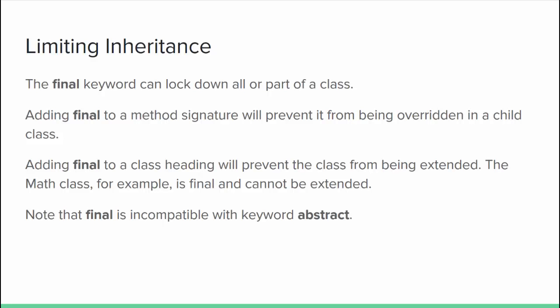There may be cases when you want to limit inheritance — a method you always want to work the same way in all child classes, or an entire class you don't want extended. The `final` keyword helps you lock down all or part of a class. Putting `final` in front of the method signature prevents that method from being overridden in any child class. Putting `final` in front of the class heading prevents the entire class from being extended — the Math class is a good example; if you try to extend the Math class, the compiler won't allow it. Be aware that the `final` keyword is incompatible with the `abstract` keyword — final means you're not allowed to override something, abstract means you have to override it, so they don't play well together.